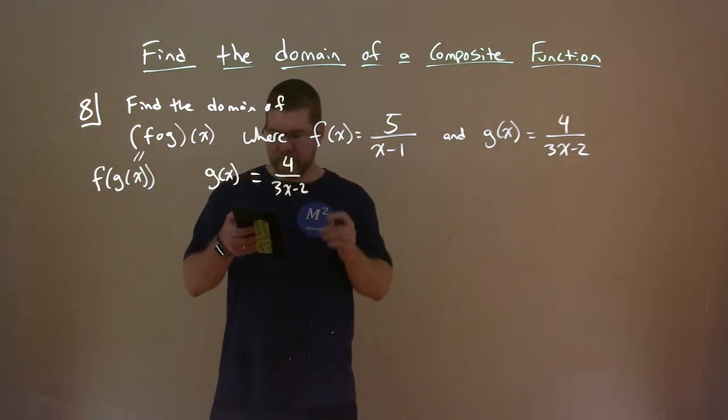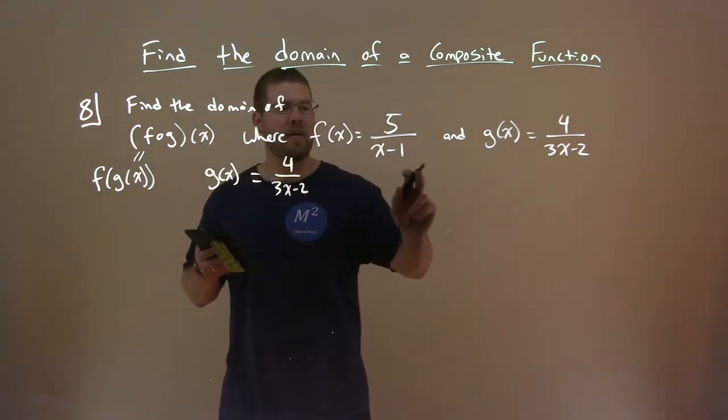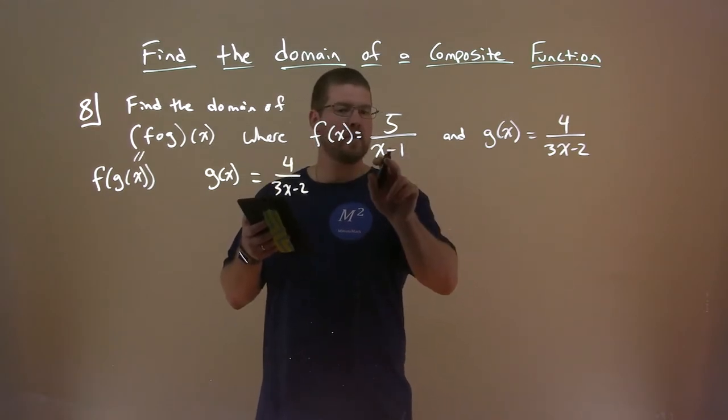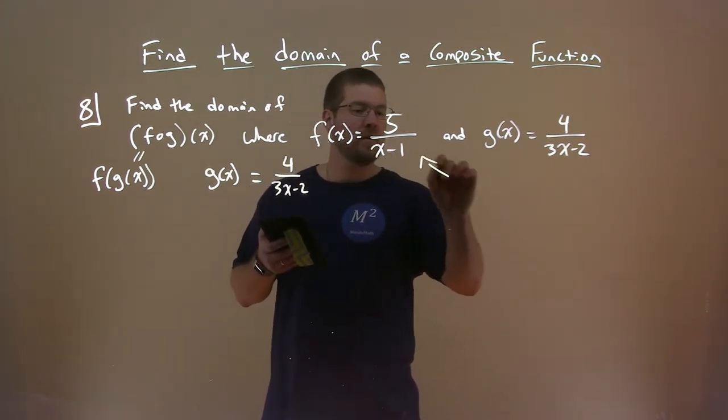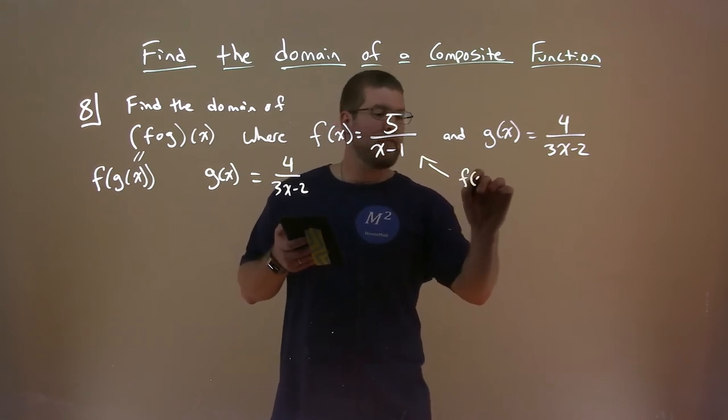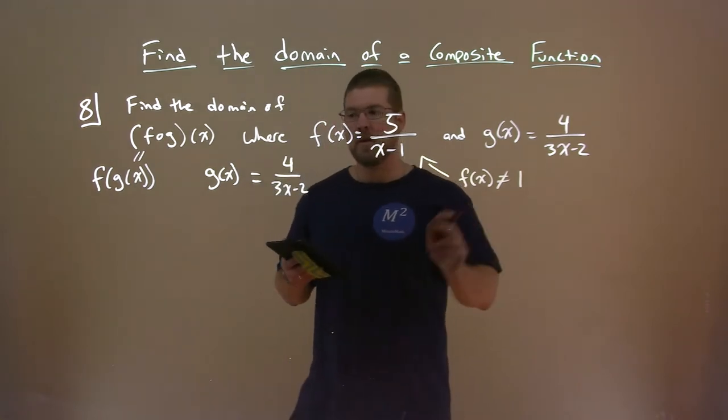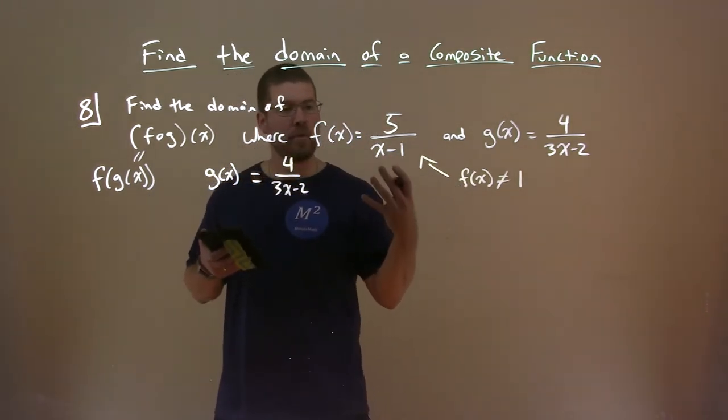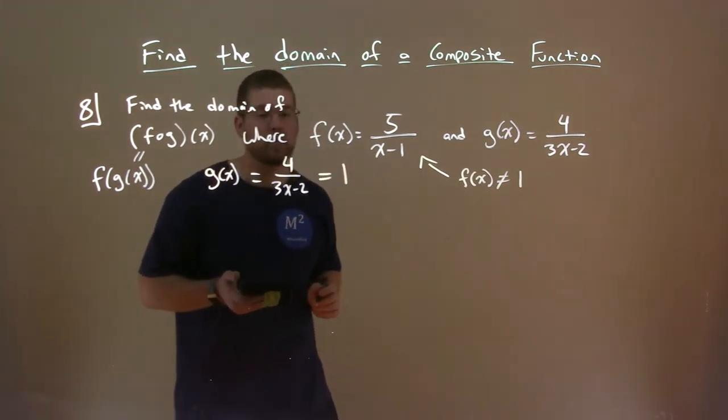Okay, well the input value of f of x, what's the input value that we can't have? The input value of f of x that we can't have is just 1. So we know that f of x cannot equal 1 because we can't have a 0 in the denominator. So what we're going to do is take our g of x and say, okay, its output is going to go into f of x here. We need to find when that equals 1.